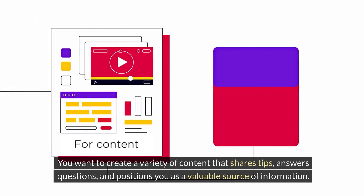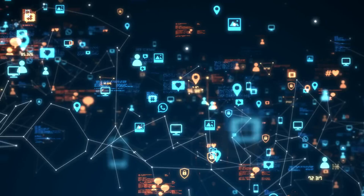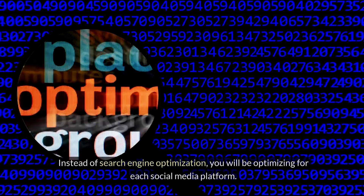You want to create a variety of content that shares tips, answers questions, and positions you as a valuable source of information. That way, people will want to click through for your free gift that you are touting. Each platform is going to have a different method of helping you get your content discovered, so instead of search engine optimization, you will be optimizing for each social media platform.